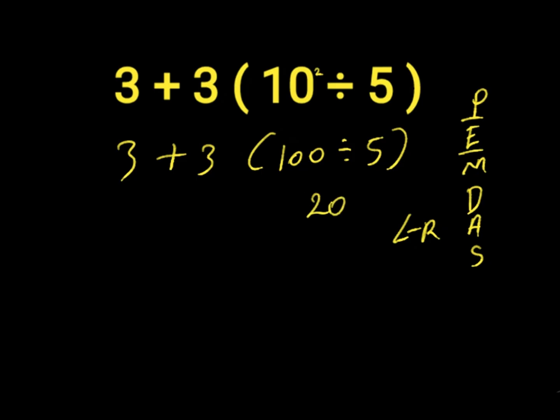We are left with 3 plus 3 times 20. This is where we got it wrong the first time, because we did addition before multiplication, which is incorrect according to the order of operations. Multiplication comes before addition, so we solve multiplication first: 3 times 20 gives us 60.